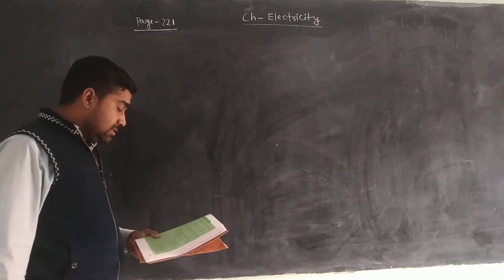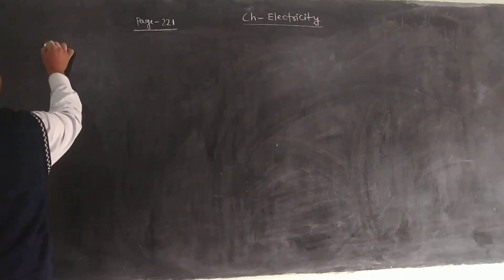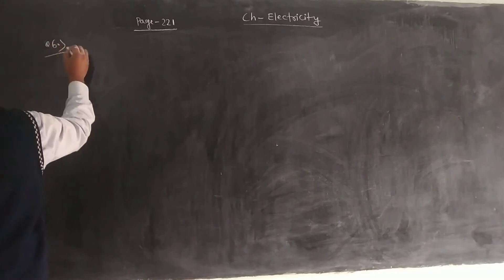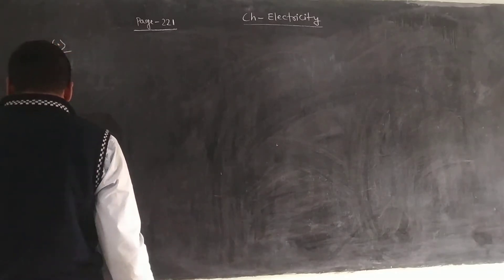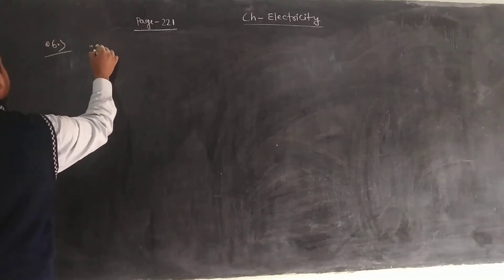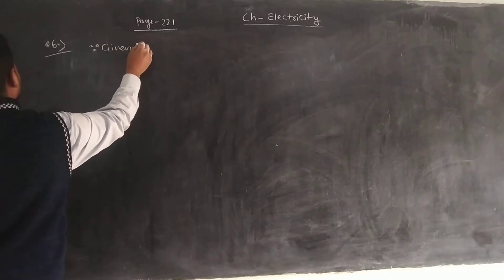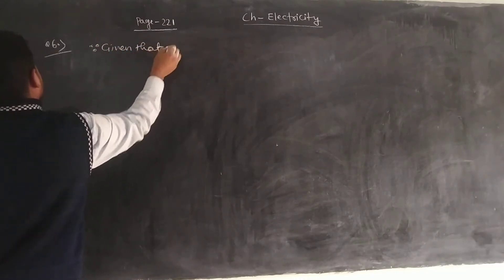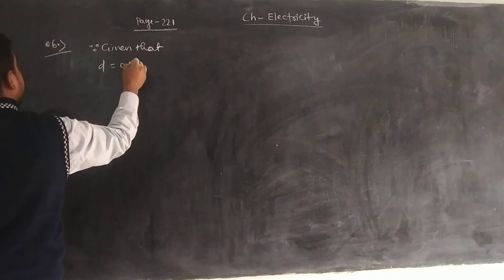Now let's talk about question number 6. Question number 6 is the diameter of copper wire. The diameter of copper wire is equal to 0.5 mm.